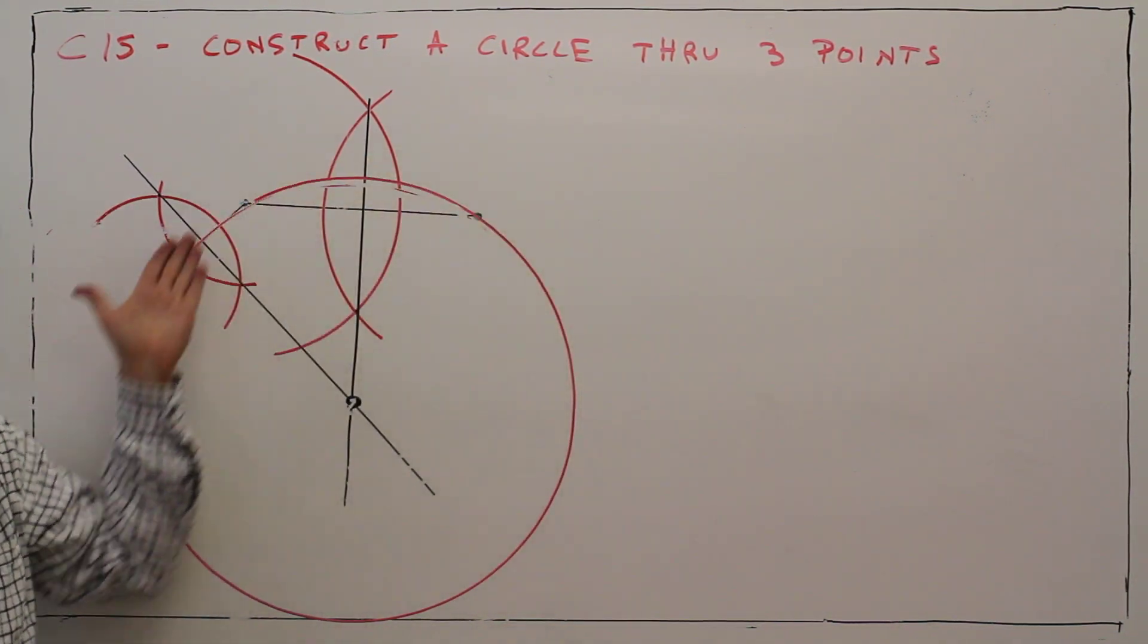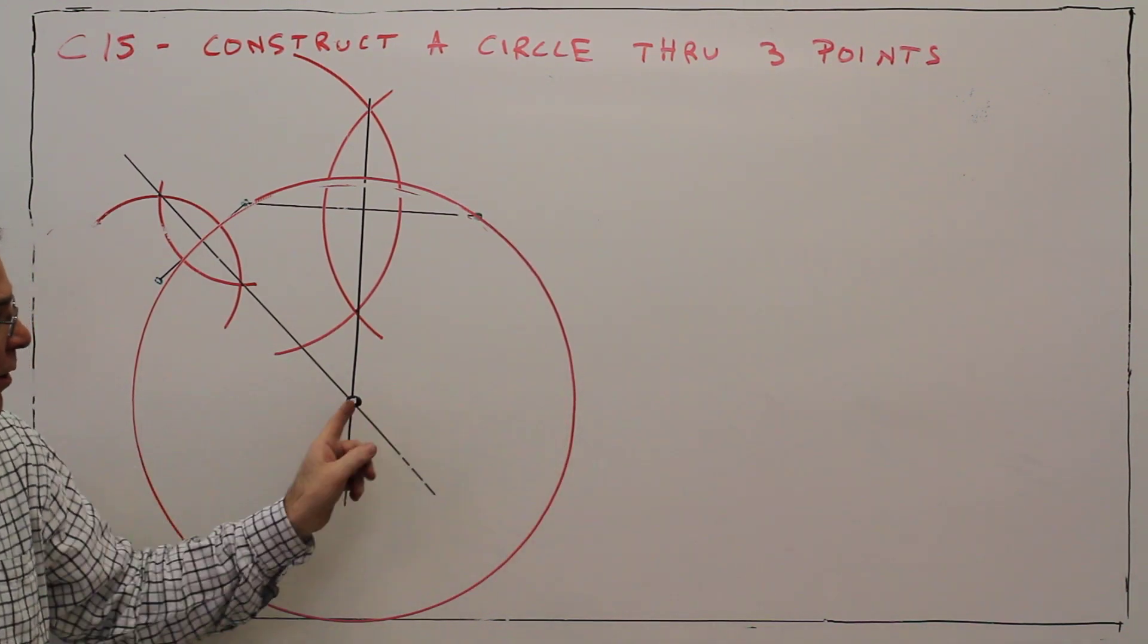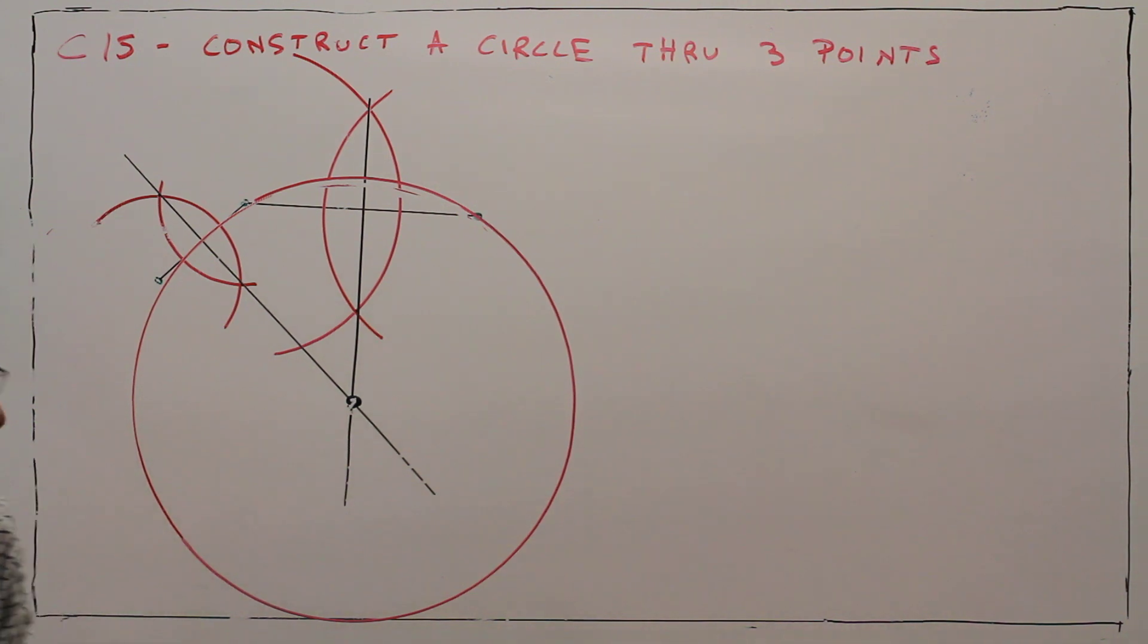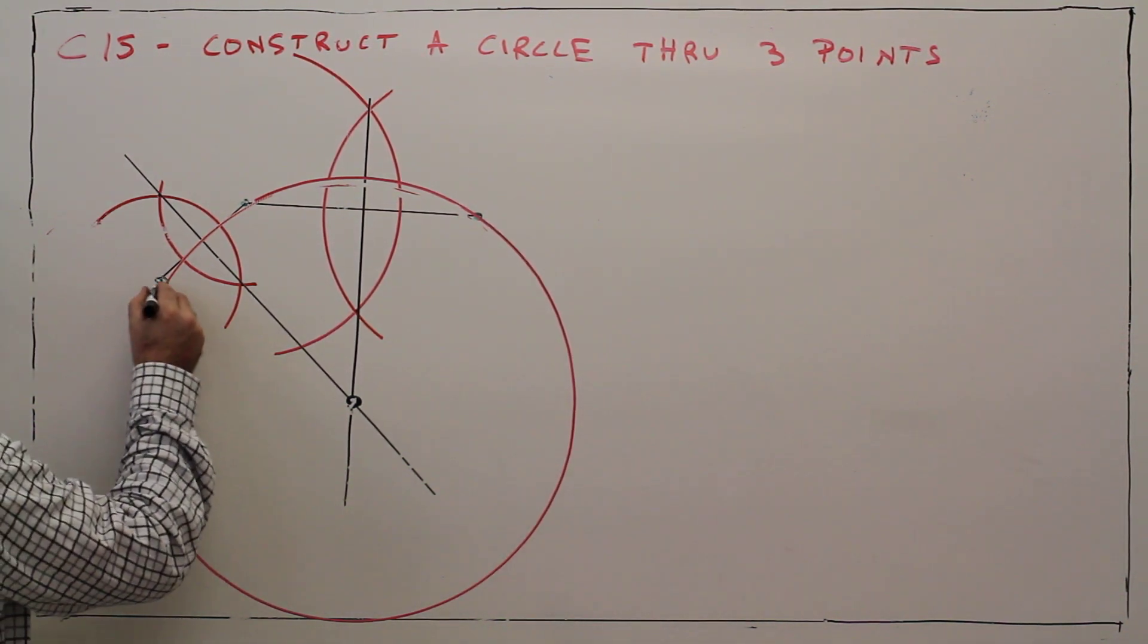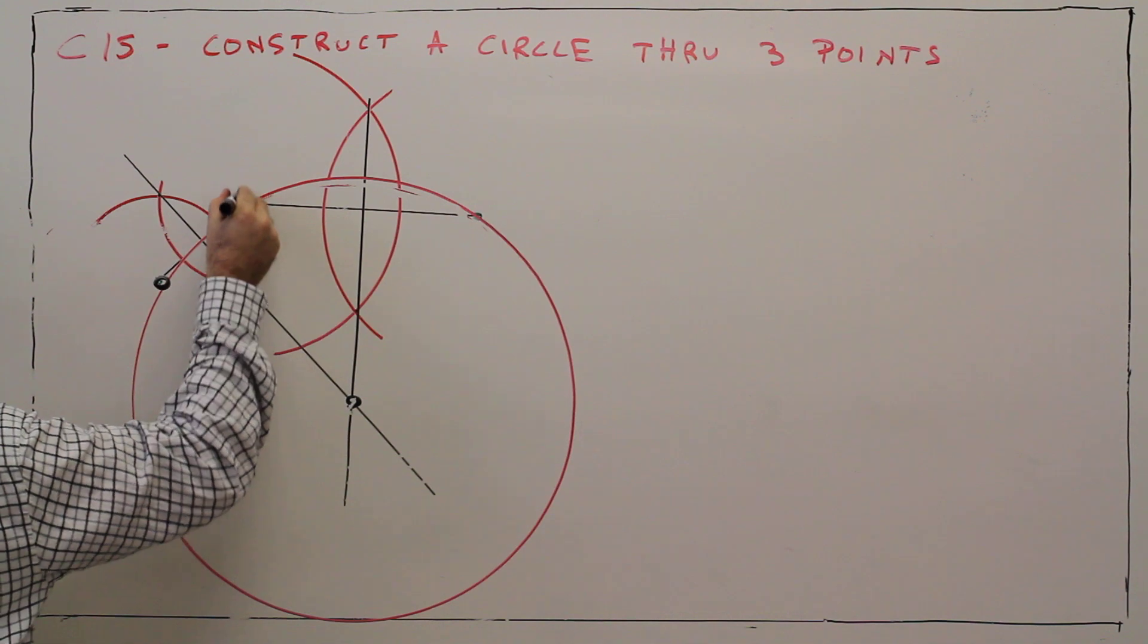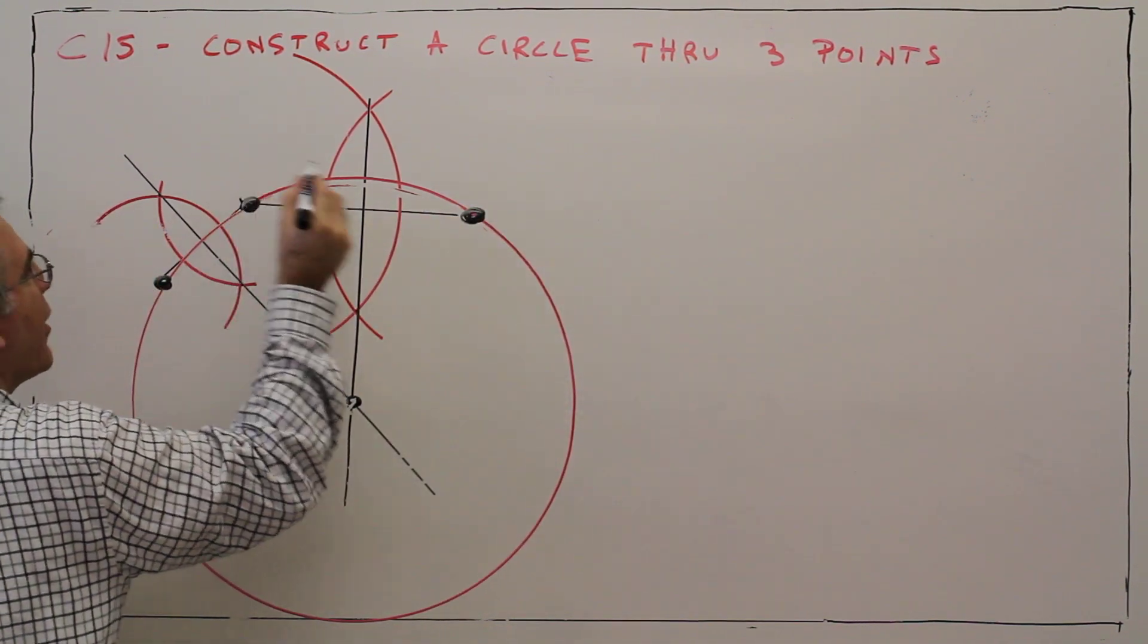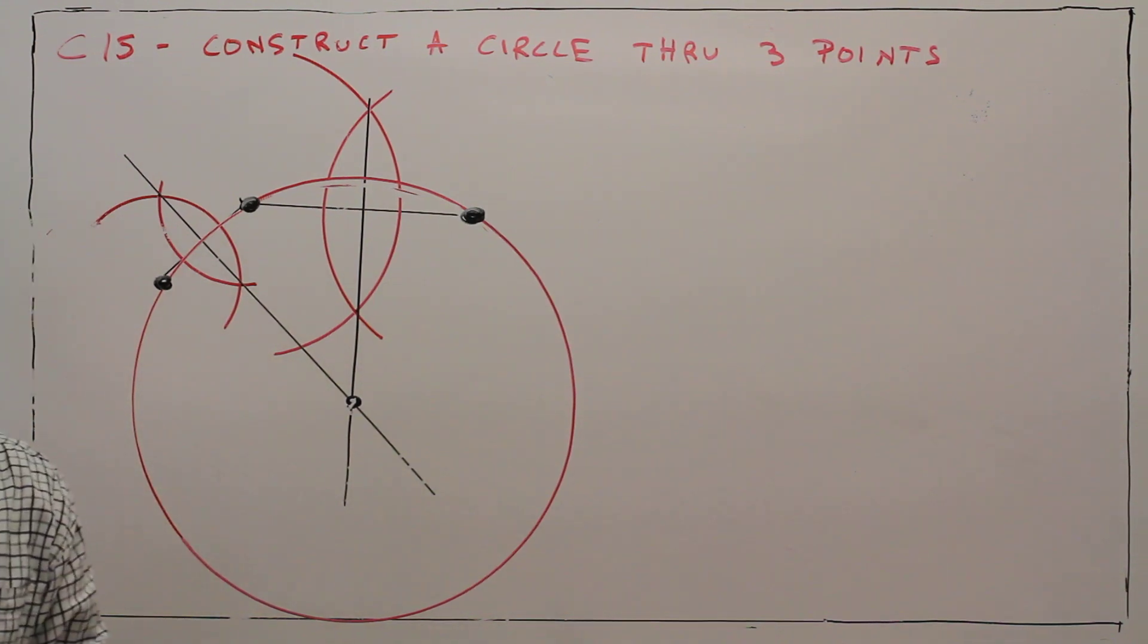But what I've just done is created one circle with the center point, given those three points that lie on the circle. And again, a little secret. Just make super large points to help conceal some of your flaws. And there you have it.